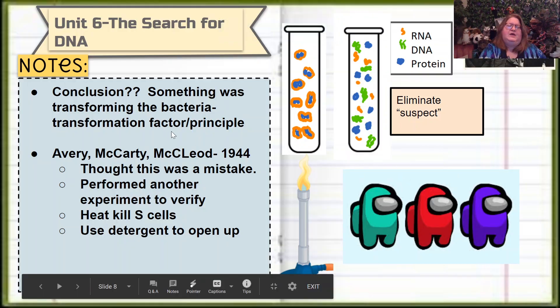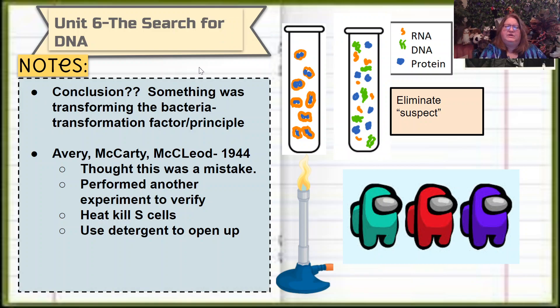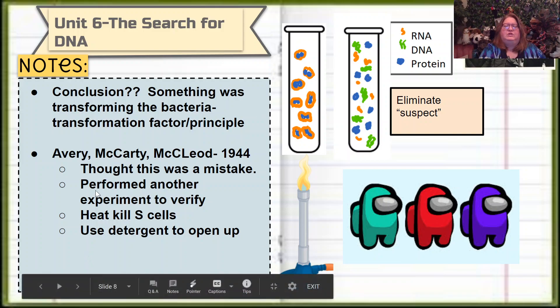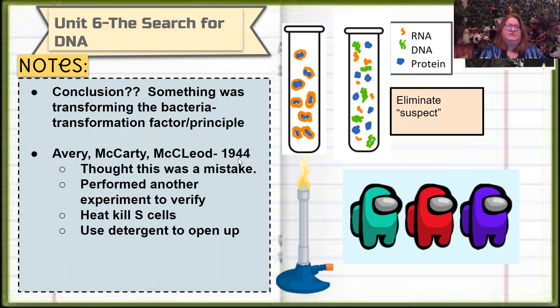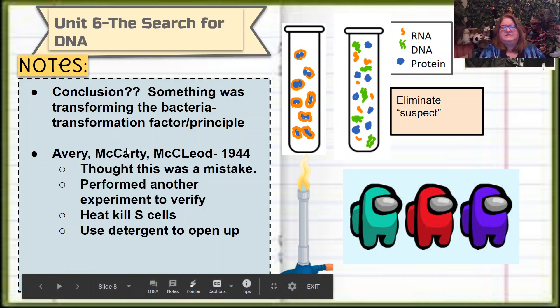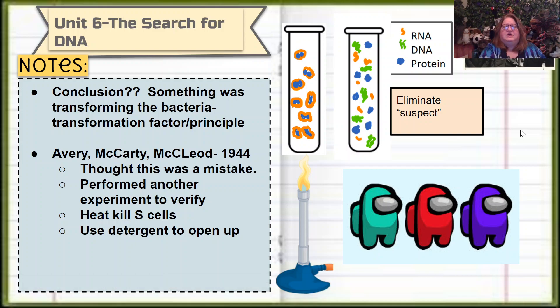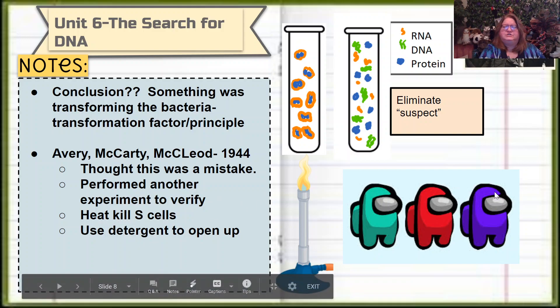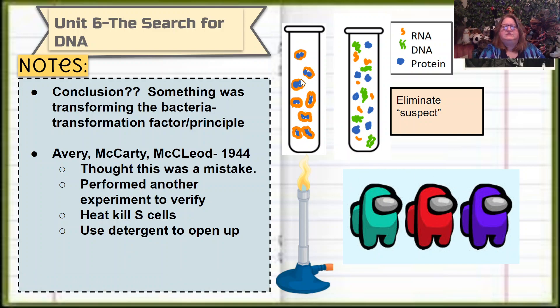What Griffith did, Griffith concluded that there was some form of transformation factor, or transformation principle. Now, there was a little bit of controversy, right? I mean, what's going on here? There should be no reason for those mice to die. And in fact, for a while, there was this idea that maybe Griffith just didn't do his experiment that well. So along comes Avery McCarty and McLeod, and notice there's a good decade later, in 1944. And so he and his researchers really sought to try to figure this out. And so he did a very clever experiment. He used heat-killed S cells, and then he used detergent to open them up. And so here we have our S cells. We're heating them up. We're going to kill them, and then we're going to use detergent to kind of open everything up. Now, I color-coded these things. We have orange is RNA, green is DNA, and blue is protein.